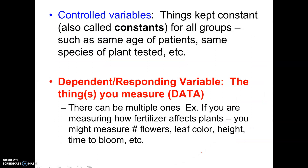Controlled variables, or constants, are the things you want to be the same for all groups. In our music experiment, they all take the same test, listen to the same kind of music, and receive the same study materials, so that any difference between groups is due to the variable and not something else. The dependent or responding variable is what you're measuring. You can have more than one, but you can only change one thing at a time. For example, if testing a fertilizer, you might measure leaf color, number of flowers, growth rate, and height — multiple dependent variables.